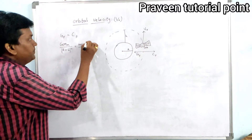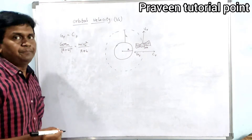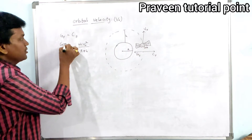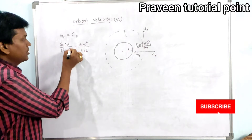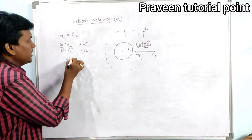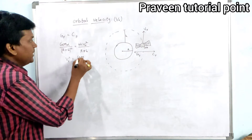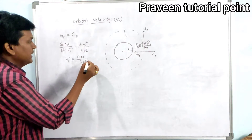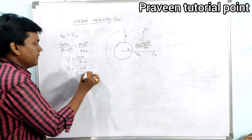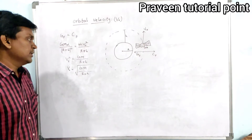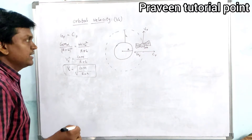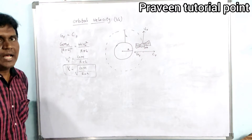If you observe both equations, small m and small m will get cancelled, and (r+h)² and (r+h) — one (r+h) will cancel. So we will get V₀² equal to GM divided by (r+h), and therefore V₀ equal to root over GM by (r+h). This is the orbital velocity of the satellite.